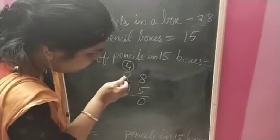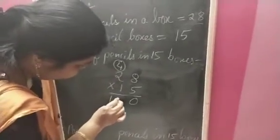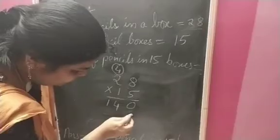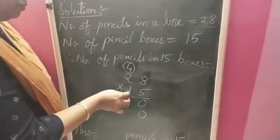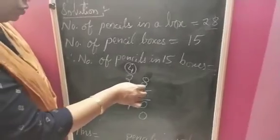5 times 2 is 10, 10 plus 4 is 14. Now, in 1's place, we will be putting 0 and from the 10's place number, we will be multiplying 28.